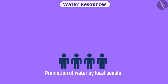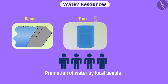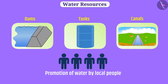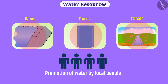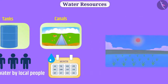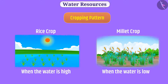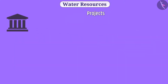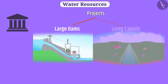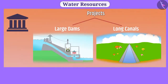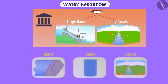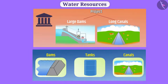Since ancient times, water has been conserved by local people by making dams, tanks and canals. These reservoirs were managed by local people so that water should be available throughout the year. With the help of centuries of experience, proper cropping patterns were adopted based on water availability. Later, large projects such as large dams and long canals were constructed by the government, with which the importance of these local methods of water conservation diminished.